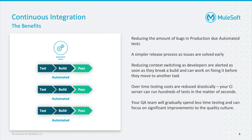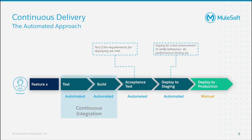What are the benefits of continuous integration? We mentioned them in the beginning: reducing the amount of bugs and problems you find in production, having a simpler release process, and reducing context switching for developers. Your testing costs will be reduced and your QA team can focus on improving quality instead of recreating different tests. That takes us to the next step — continuous delivery.